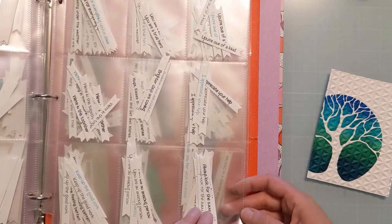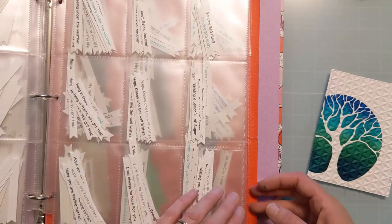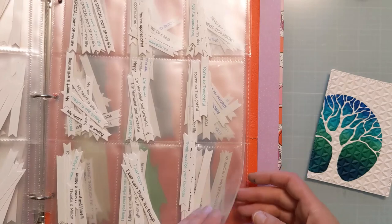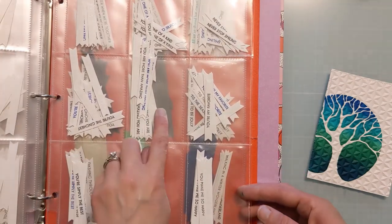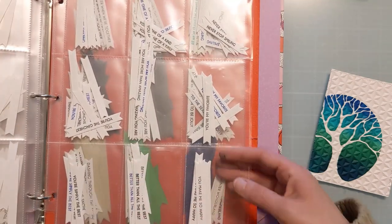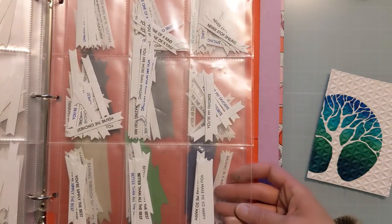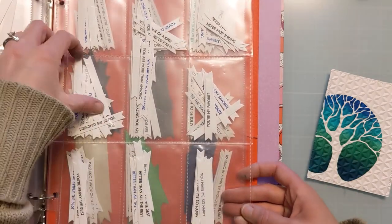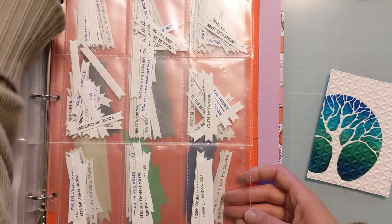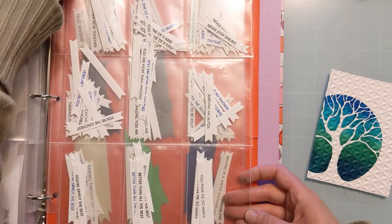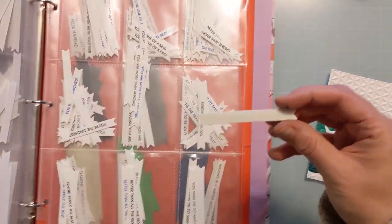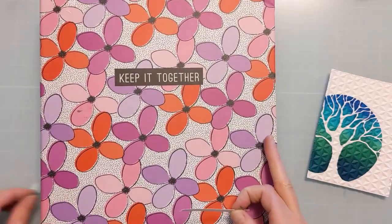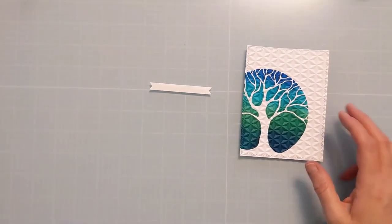Now this is my book for my sentiment strips. So these are all another LDRS creative product here. All of these little strips are basically you get like one theme stamp. So maybe like thank yous. And it'll have 10 maybe sentiments on this one solid stamp. So you stamp it once, and then you buy the coordinating die that works with all of these stamps. And then it cuts them all out in one go.